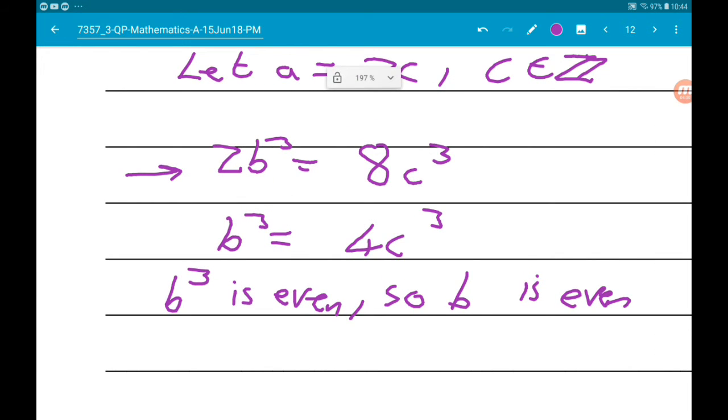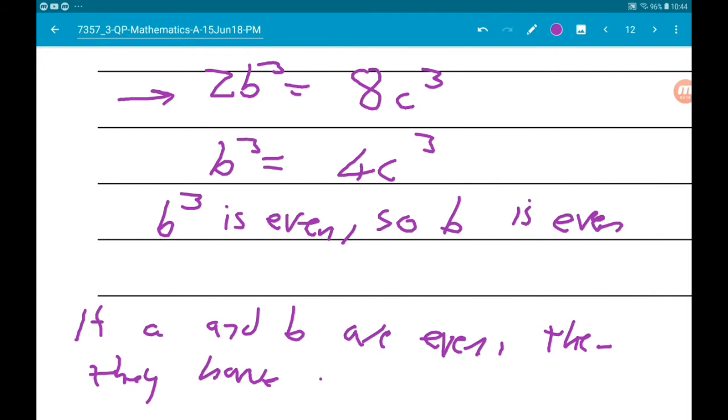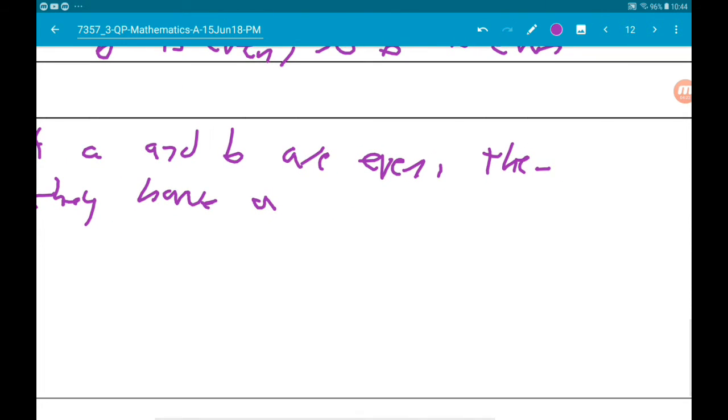And that means if a and b are both even, then they have a common factor of 2.